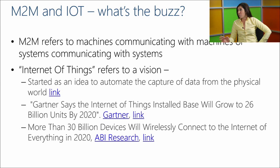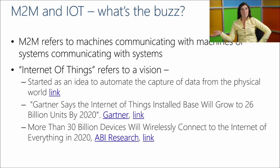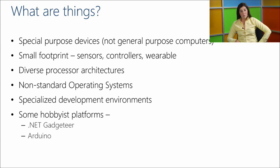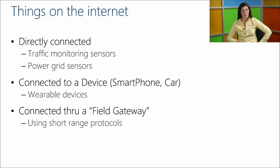To level-set what we're going to talk about today: we're going to cover communication patterns in devices, especially using Service Bus for messaging, and what sorts of scenarios that enables. Some of them will involve physical devices — we have a Raspberry Pi here — and others are more illustrative of what that means for systems. If you ask 100 people what IoT encompasses, you'll get 105 different answers.